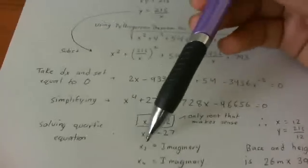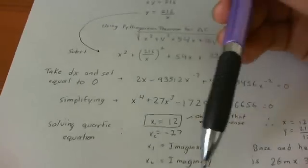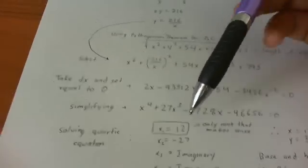One of the roots is X equals 12, negative 27. And these two roots are imaginary so you don't have to take these into case. X equals 12 is the only one that makes sense.